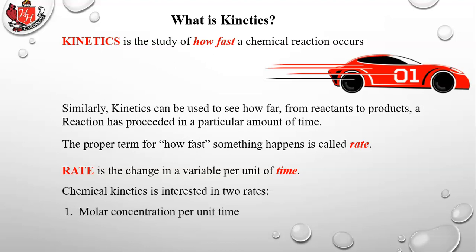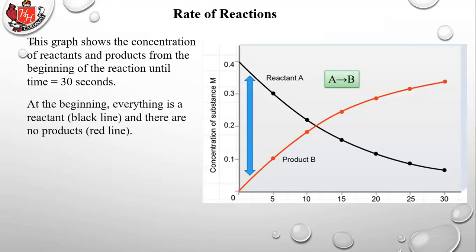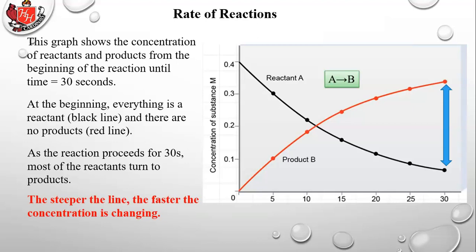Chemical kinetics is interested in two rates: the molar concentration per unit time or the pressure per unit time. This graph shows the concentration of reactants and products from the beginning of the reaction until 30 seconds. At the beginning everything is a reactant — the black line — and there are no products. As the reaction proceeds for 30 seconds, most of the reactants turn into products. The steeper the line, the faster the concentration is changing — more molecules hit each other and reform as products.